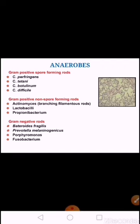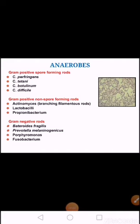There is a long list of anaerobes. Gram-positive rods that are spore-forming include Clostridium species. Gram-positive rods that are non-spore-forming include Actinomyces, which are part of the normal flora of the oral cavity, and Lactobacilli, normal flora of mouth, colon, and female genital tract. Among gram-negative rods, Bacteroides fragilis is predominant in the human colon, Porphyromonas is part of normal flora of the oral cavity, and Fusobacterium is normal flora of mouth, colon, and female genital tract.